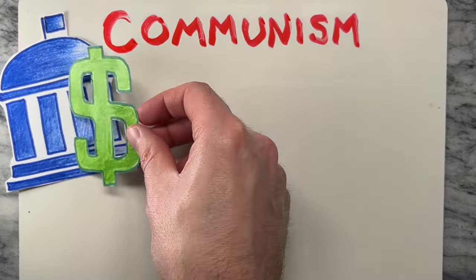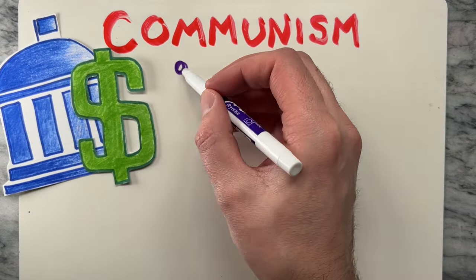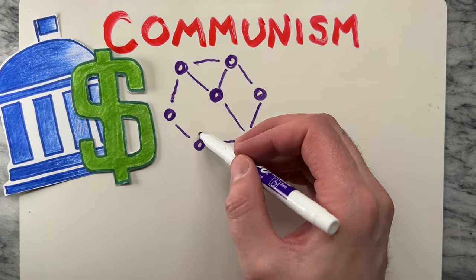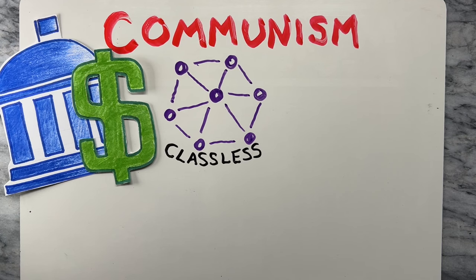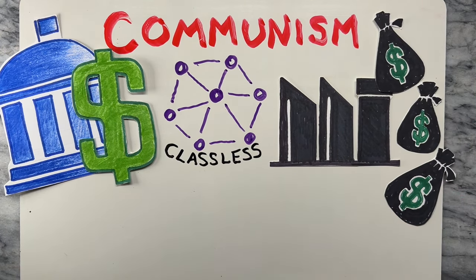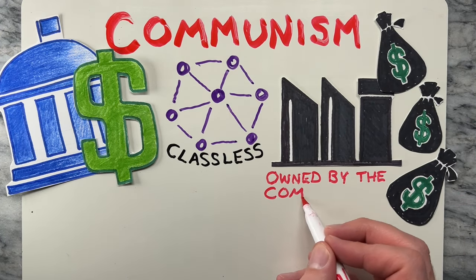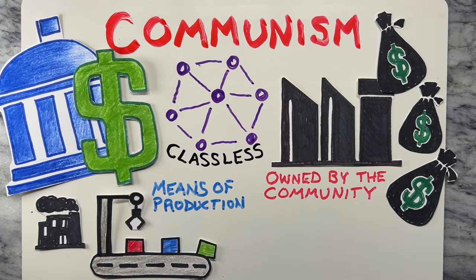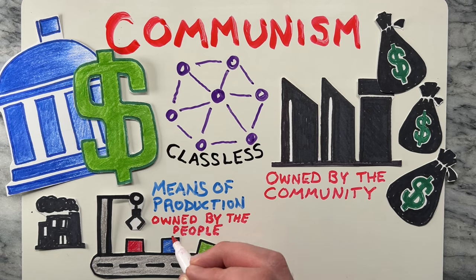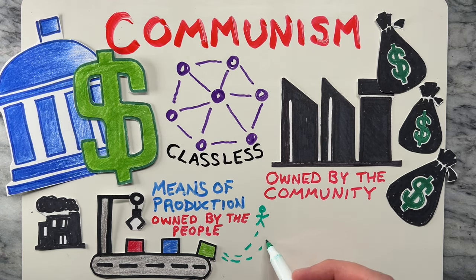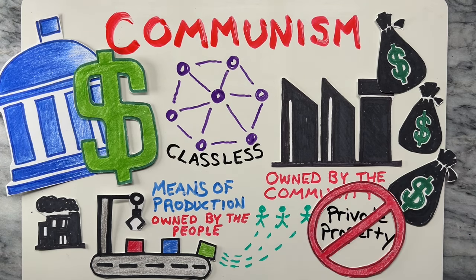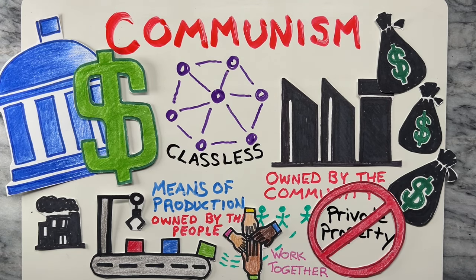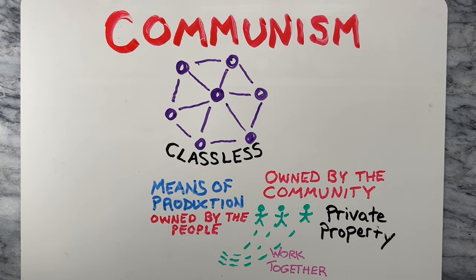Communism is a political and economic ideology that advocates for the establishment of a classless society in which all resources and wealth are owned and controlled by the community as a whole. The goal of communism is to create a society in which the means of production are owned by the people and goods and services are distributed according to the needs of the community. In this system there is no private property and all individuals work together to create a society that is free from economic and social inequality.